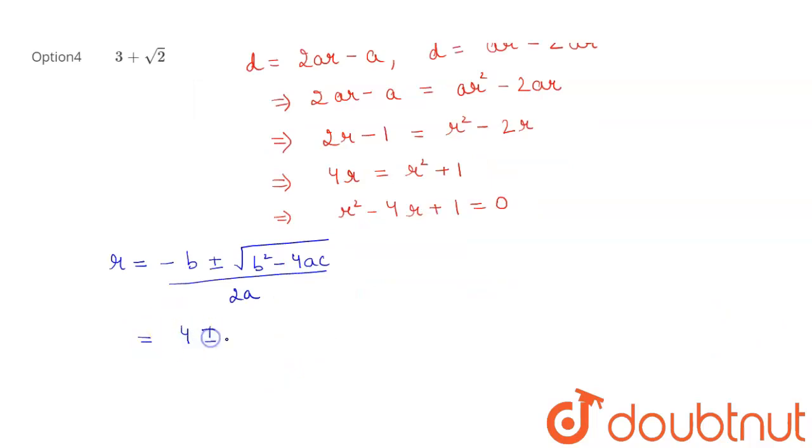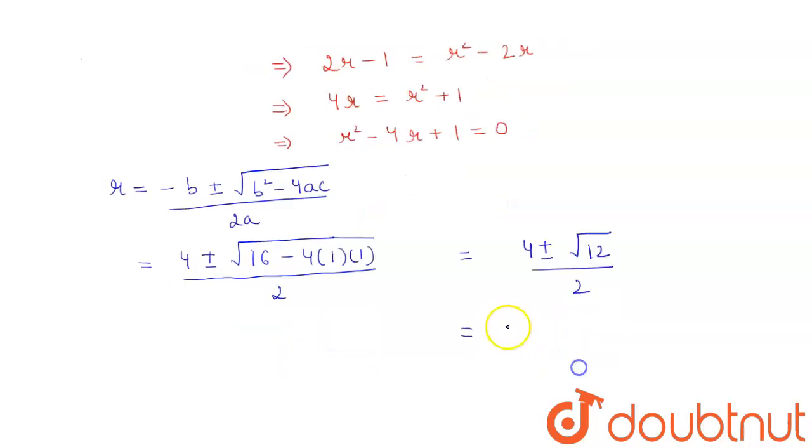plus 4 plus minus under root of b square is 16 minus 4 into 1 into 1 divided by 2 into a is 1, so it will be equal to 2. This gives 4 plus minus under root of 16 minus 4 is 12 upon